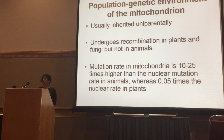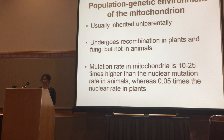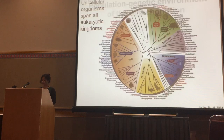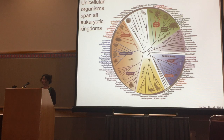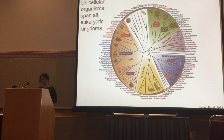A lot is known about mitochondria in plants and animals, but we lack most such understanding in unicellular eukaryotes. Unicellular organisms actually span all the eukaryotic kingdoms and comprise most of the biogenetic diversity, but are usually heavily understudied. They also have a variety of mitochondrial genome structures.